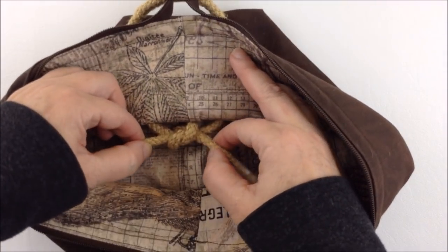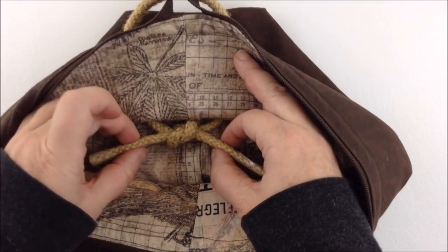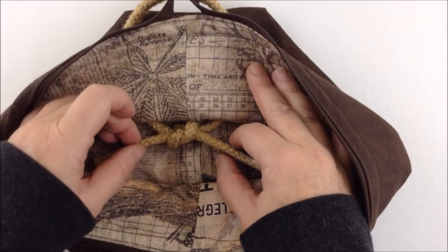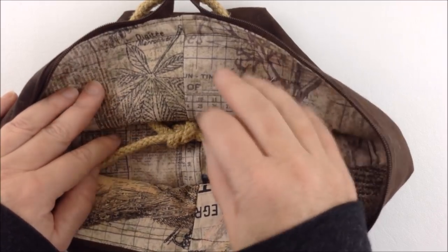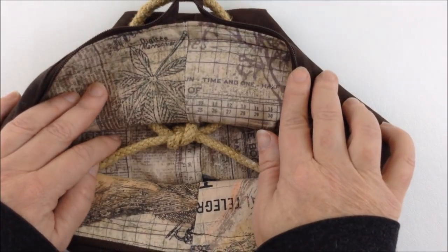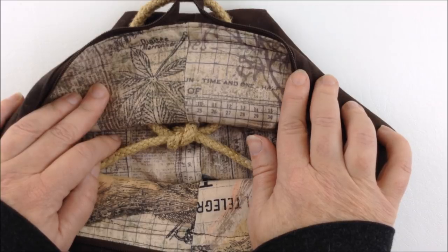Then you just snip off the excess cord. You'd probably be best to put some fray check or some glue on the ends to stop the cord or the rope from unraveling. Then it's just a matter of inserting your frames into the top section here then your bag is complete. I hope you enjoyed this rope handle tutorial and thanks for watching.